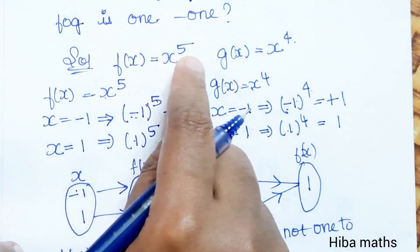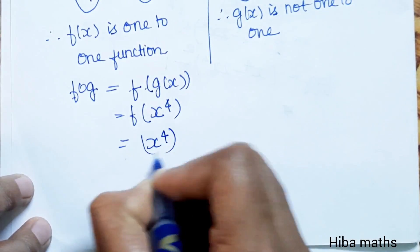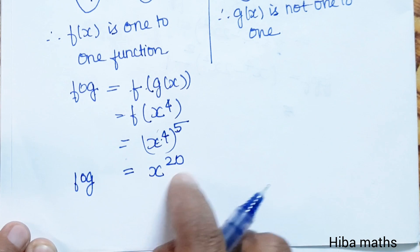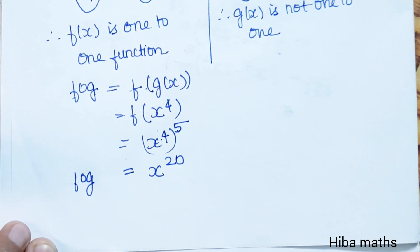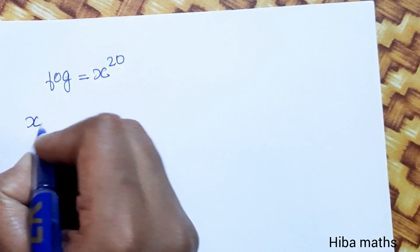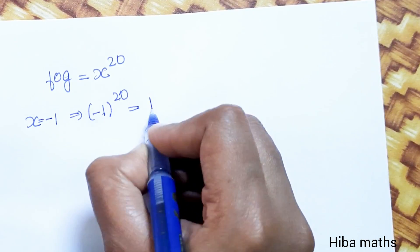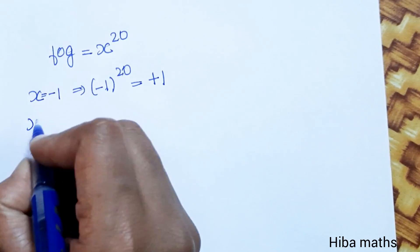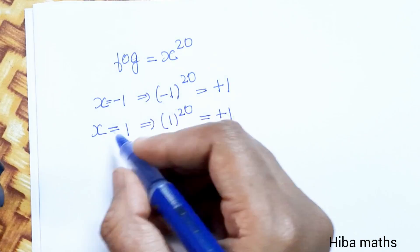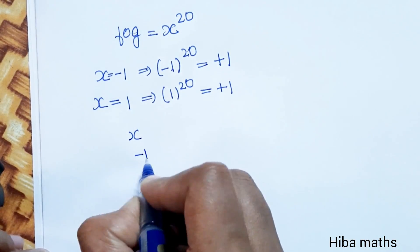f(g(x)) = f(x^4) = (x^4)^5 = x^20. Since the power 20 is an even number, substituting x = -1 gives (-1)^20 = 1, and x = 1 gives (1)^20 = 1. Different elements map to the same image, so f∘g is not one-to-one.